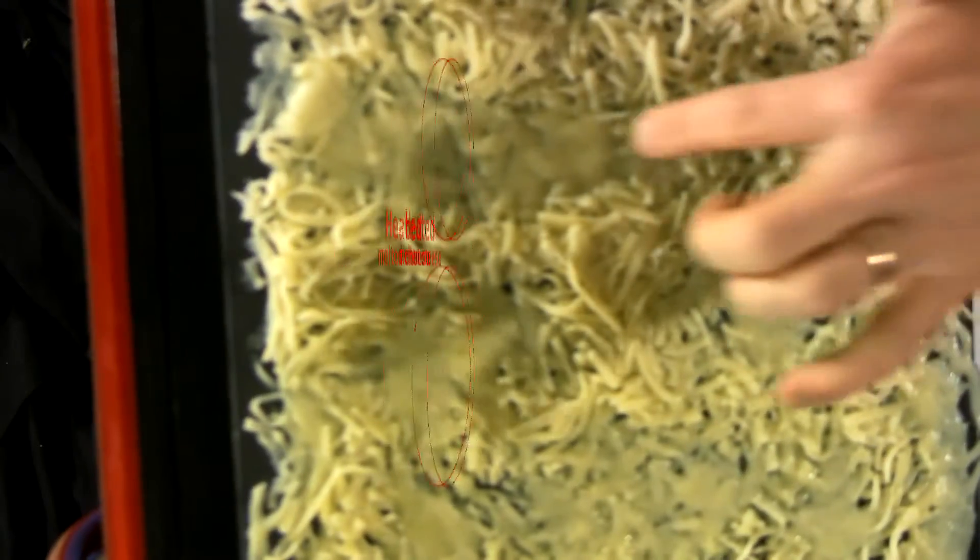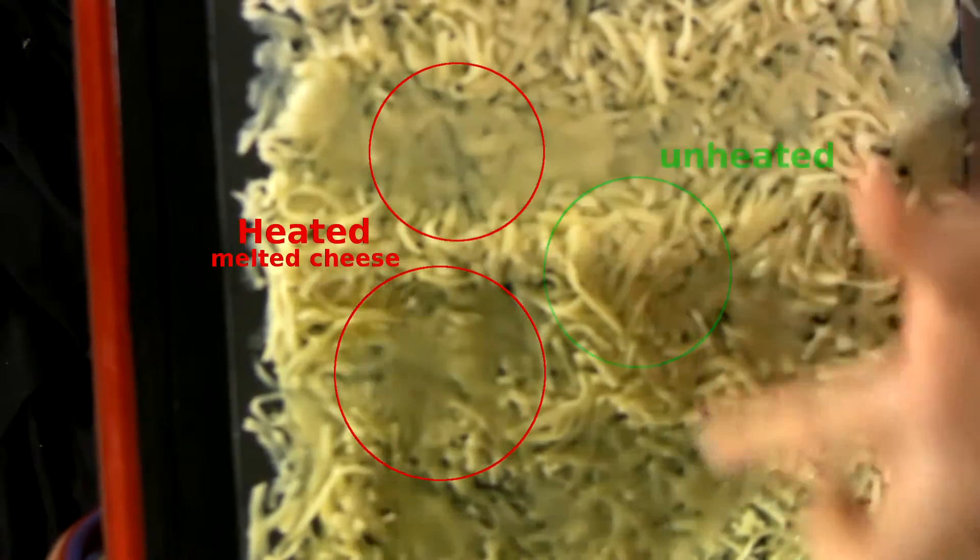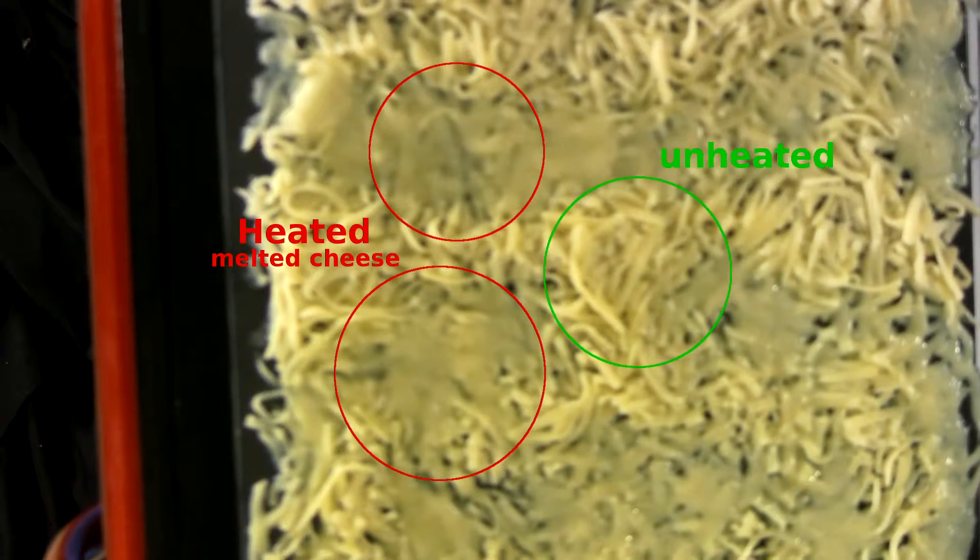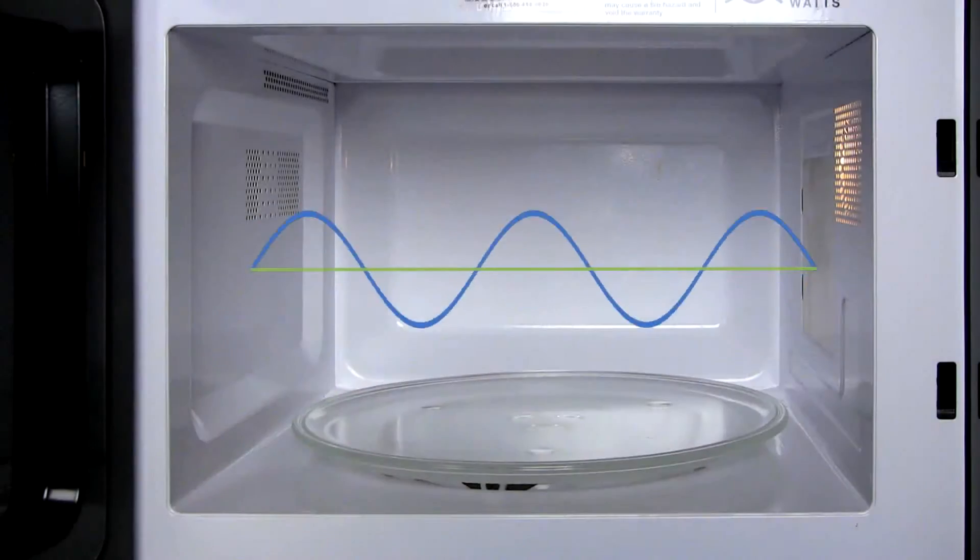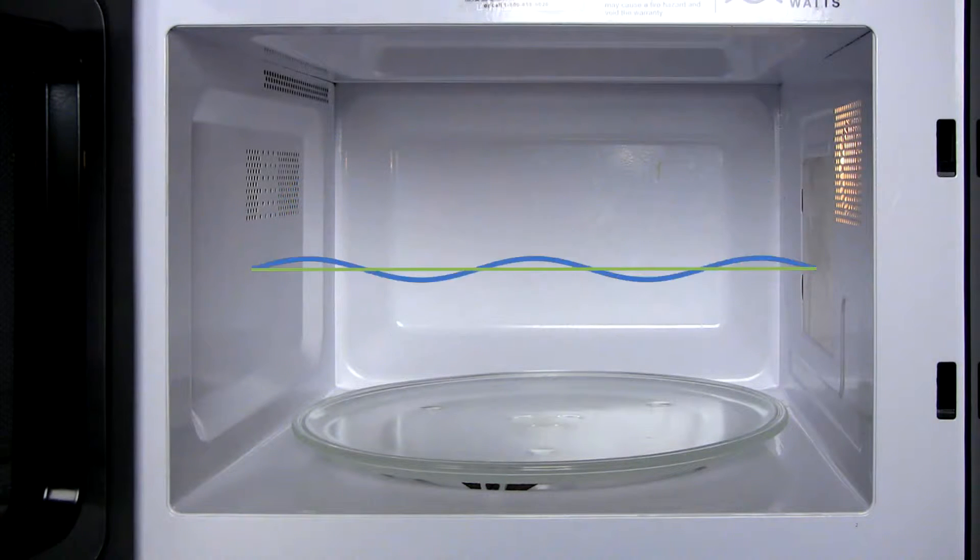Now you can see on here sections where the cheese is completely melted and other sections where it's completely unheated. The oven's metal walls only reflect waves of a length that fits inside the oven. This standing wave causes hot and cold spots inside the oven.